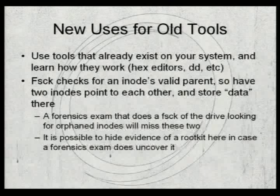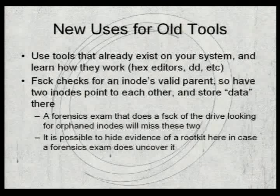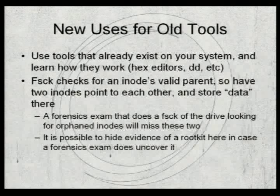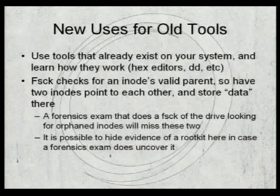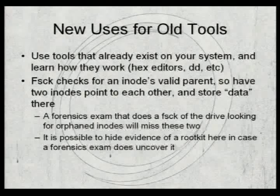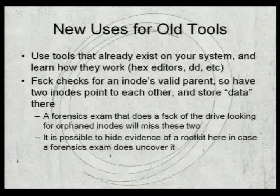On the topic of Fsck: what it normally does is look to make sure inode stuff doesn't have orphans — it's looking for a parent. An old-school technique was to create loops between inodes, and when it's time to get to hidden data, you reconnect things, access it, then hide it again. This can work both ways — you may want to leave evidence of a rootkit hidden in there that a forensics investigation may or may not uncover, depending on whether you want the defense or prosecution to find it.